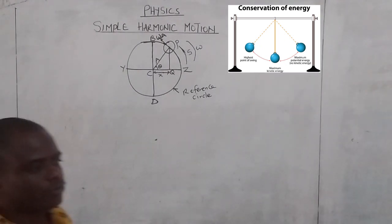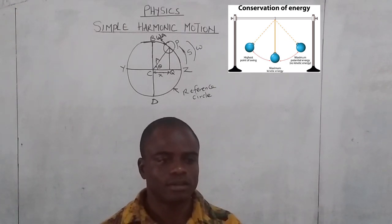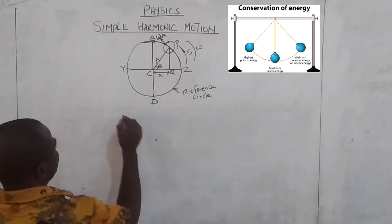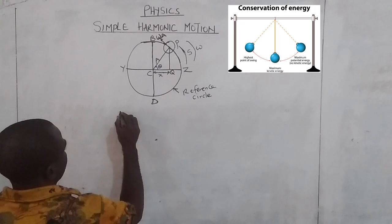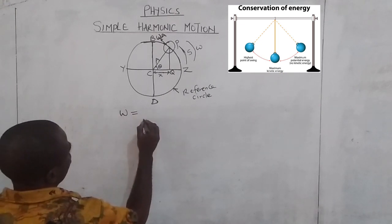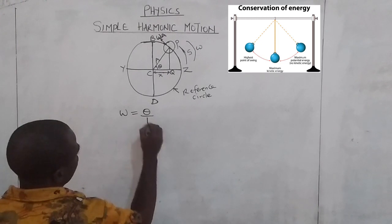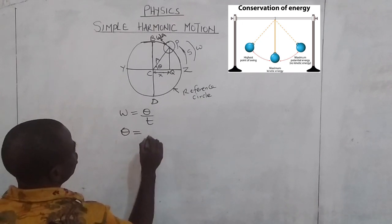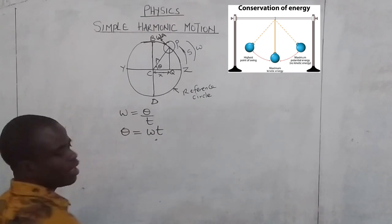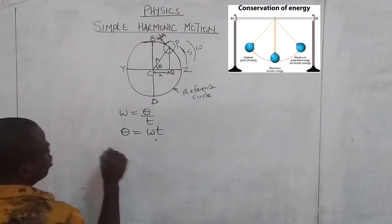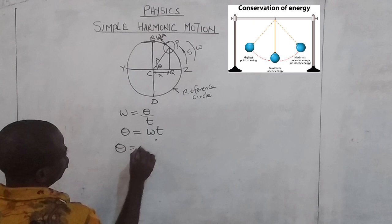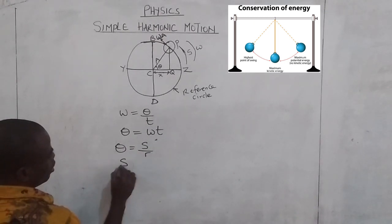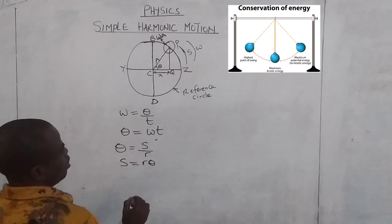We are going to derive an expression for the relationship between linear velocity and angular velocity. We have angular velocity which equals angle turned through by the body over time taken. When you cross multiply, we have angle turned through by the body equals angular velocity multiplied by time. We also have theta equals distance over radius, and when you cross multiply, distance equals r times theta.